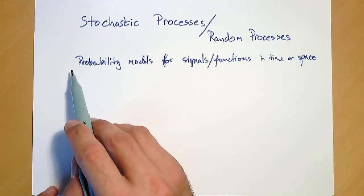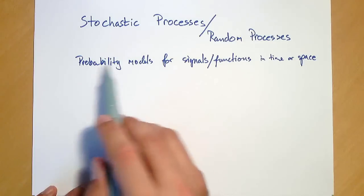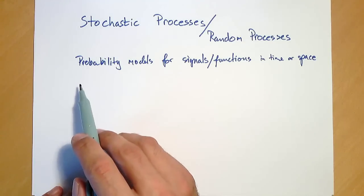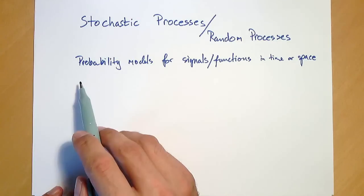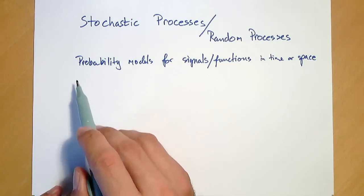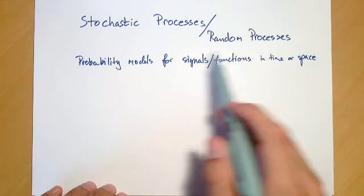In fact there are many examples of such probability models, but before we dive into the mathematical theory, I think it would be a good idea to look at a few examples of real-world problems or real-world signals where it might make sense to model them as stochastic processes or random processes.